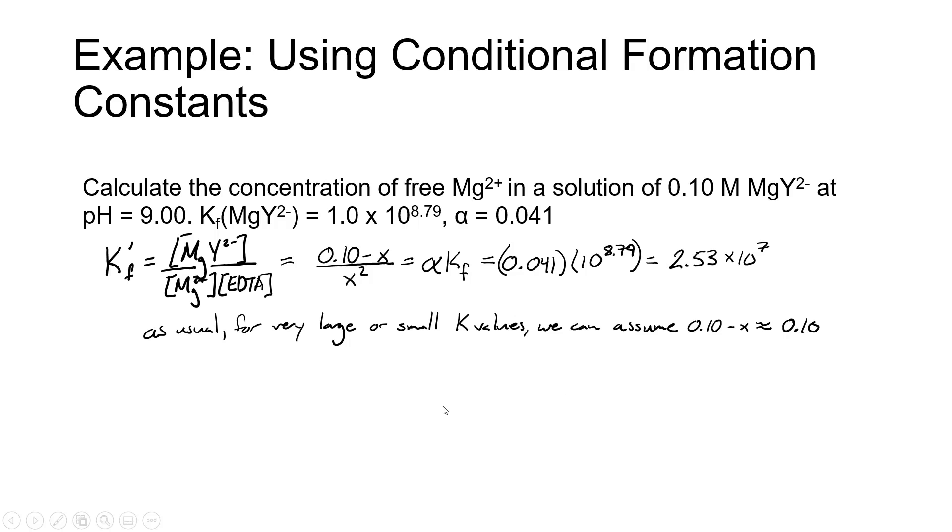From an ice table, we can take that then to be the concentration of MgY2 minus is going to be 0.10 minus X. The concentration of free magnesium is going to be X. And the concentration of free EDTA, which comes from the breakdown of the MgY2 minus complex, will also be X.